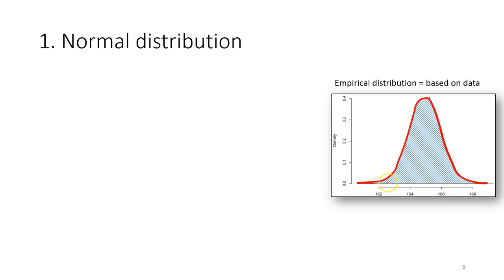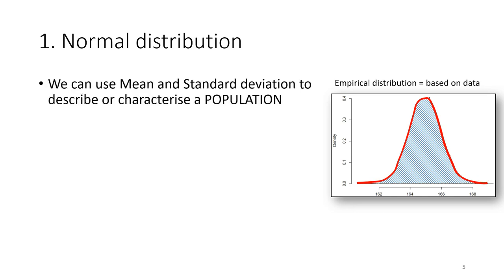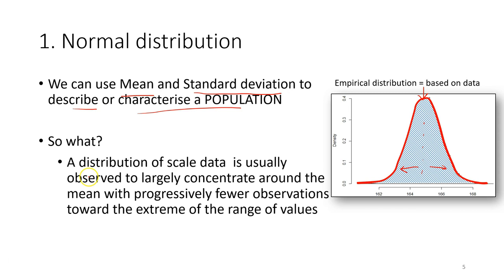Normal distribution, as we discussed before, is the distribution that shows the bell shape. For example, if you sample 10,000 students from a population and measure the body height of each student, then plot all the data, you will get the empirical distribution of your data. As we learned in the previous lecture, we can use mean and standard deviation to describe or characterize a population — the central tendency and also the measure of dispersion. The distribution of scale data is usually observed to largely concentrate around the mean, with progressively fewer observations towards the extreme values.